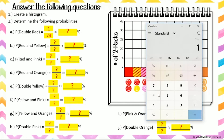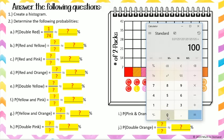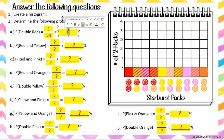If I divide this number, I get a decimal of 0.0135 repeating. In order to convert my decimal to a percent, I will need to multiply my decimal by 100. I will also round my percent to the nearest tenth — this means that I have a 1.4% chance of obtaining a pack that has two red Starbursts. This is a very low percent, making it very unlikely to get a pack of two red Starbursts.